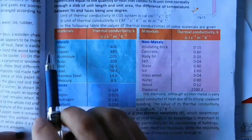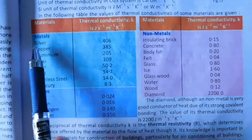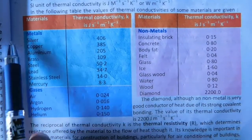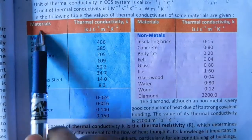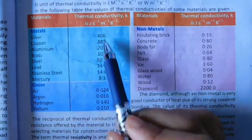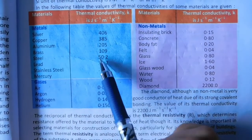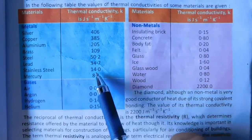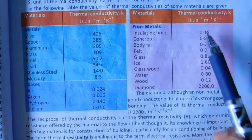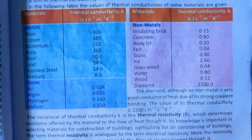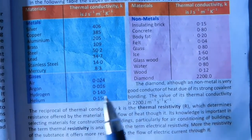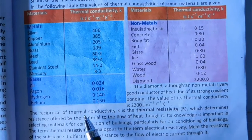Now let's look at two tables giving the values of thermal conductivity for different materials. The metals usually have very high values of thermal conductivity, meaning they are very good conductors. Non-metals have very low values, meaning they are bad conductors. Gases are also very poor conductors of heat.